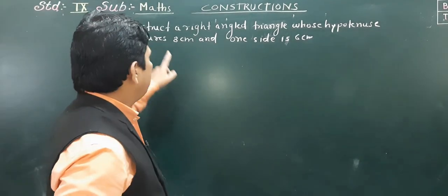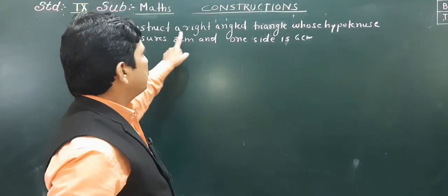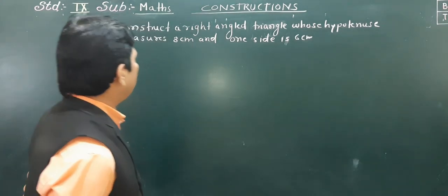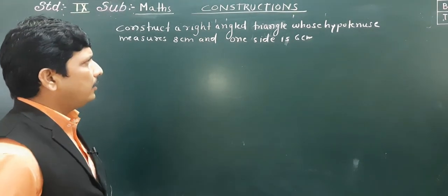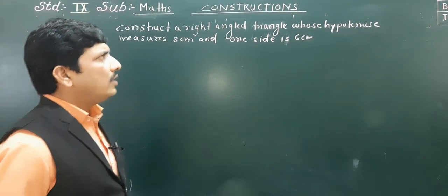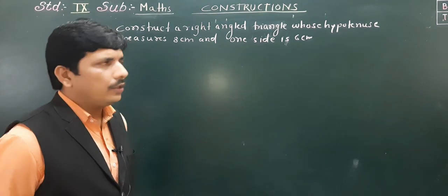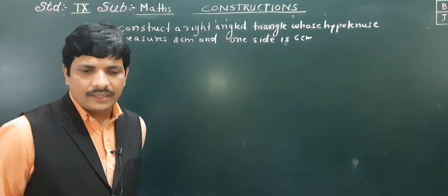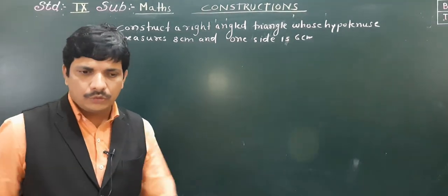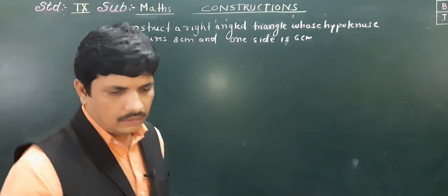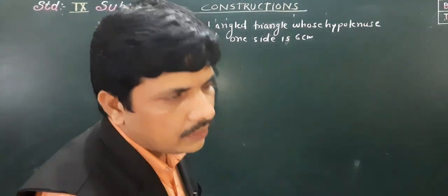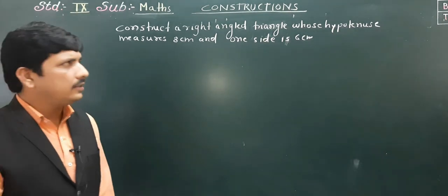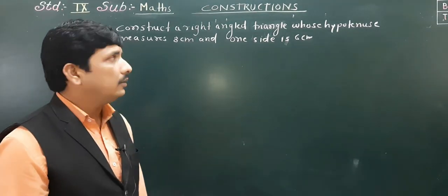Our first problem is to construct a right angle triangle whose hypotenuse measures 8 centimeters and one side is 6 centimeters. Here we have to construct a right angle triangle. A right angle triangle means one angle is 90 degrees — that triangle is known as a right angle triangle.